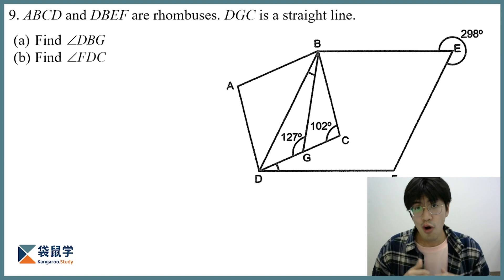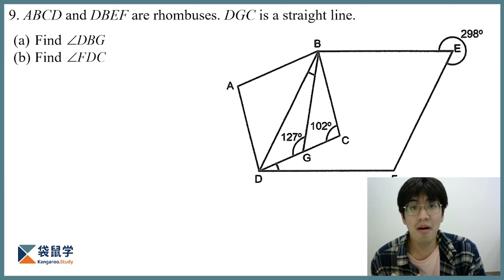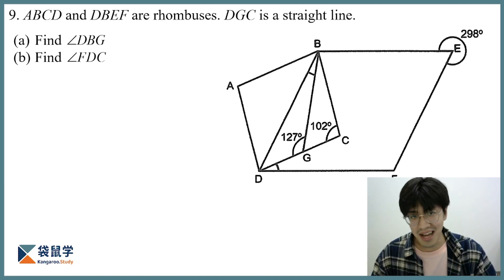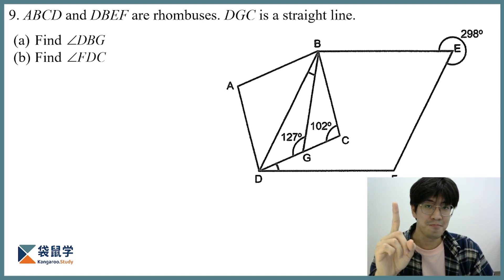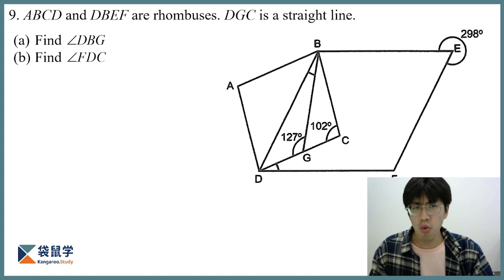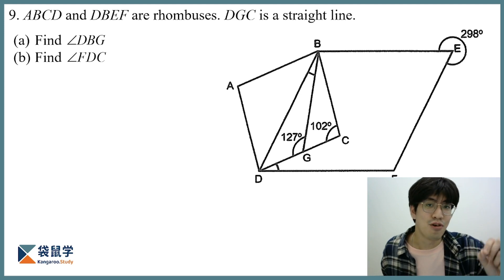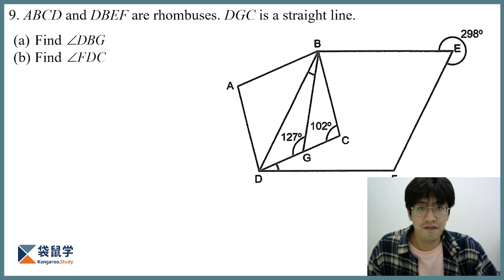Whenever you get stuck in an angle calculation problem or geometry problem, you have to do just one thing: look up the given information. So in these questions, what are the given information? First, we know ABCD are rhombuses. What are some properties of rhombus?